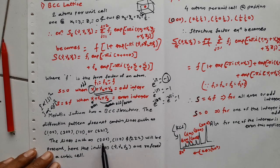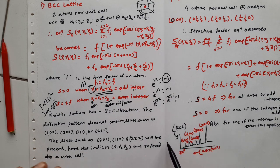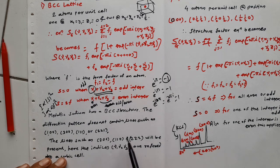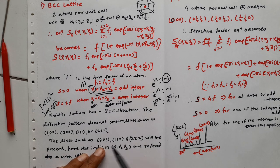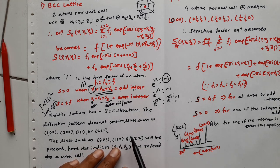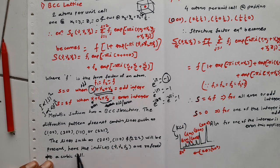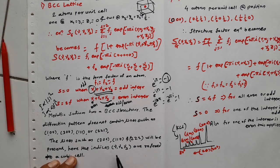But lines where the summation becomes even do give peaks. For example, (200): 2+0+0=2, which is even, so we get a peak. (110): 1+1+0=2, even, so we also get a peak there. These peaks will be present in the diffraction pattern. The indices nu1, nu2, nu3 refer to the cubic cell only.